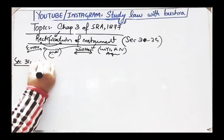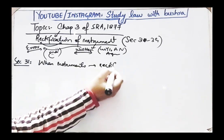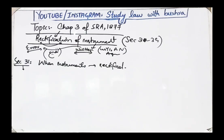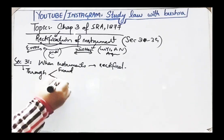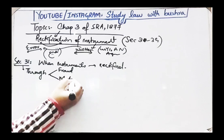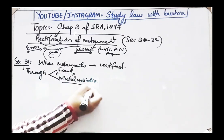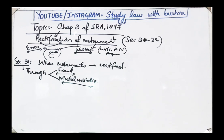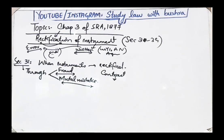Now we start from Section 31. Section 31 is titled 'When instrument may be rectified.' It states: when through fraud or mutual mistake of the parties, a contract or other instrument in writing does not truly express their intention — meaning when there is fraud by one party or a mutual mistake by both parties, and the parties' intention at the time of making the contract was something else but due to fraud or mutual mistake that intention was changed.